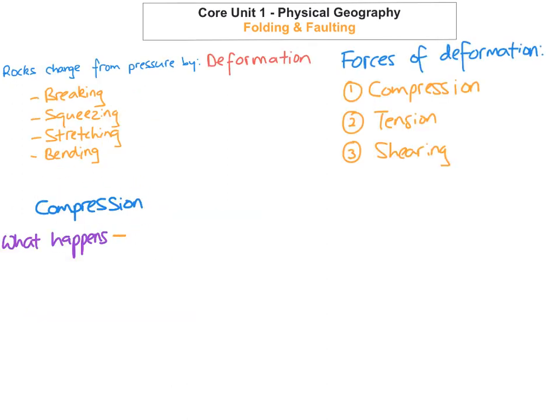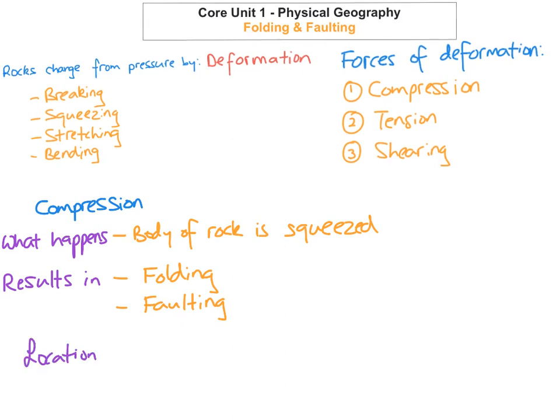The first one we're going to look at is compression. What happens is a body of rock is squeezed together. Because the body of rock is squeezed together, this results in folding and faulting. A location where this takes place is at destructive plate boundaries, also known as converging plate boundaries. The reason is because for the rocks to be squeezed together, the plates need to be crashing and colliding into each other.